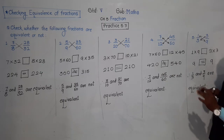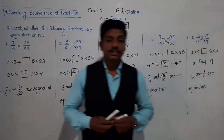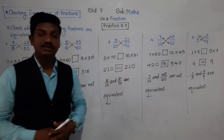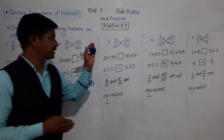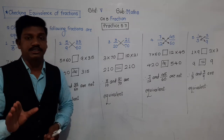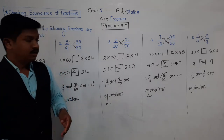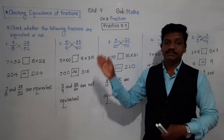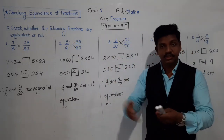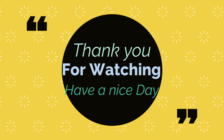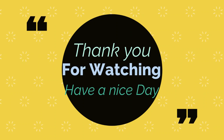If the cross products are equal, then they are equivalent fractions. So in this way we can check, if two fractions are given and we are asked whether they are equivalent or not, by doing the cross multiplication and finding the cross product. These first five examples were from Practice 5.7. The remaining three examples you have to do by yourself for practice. Thank you for today and have a nice day.